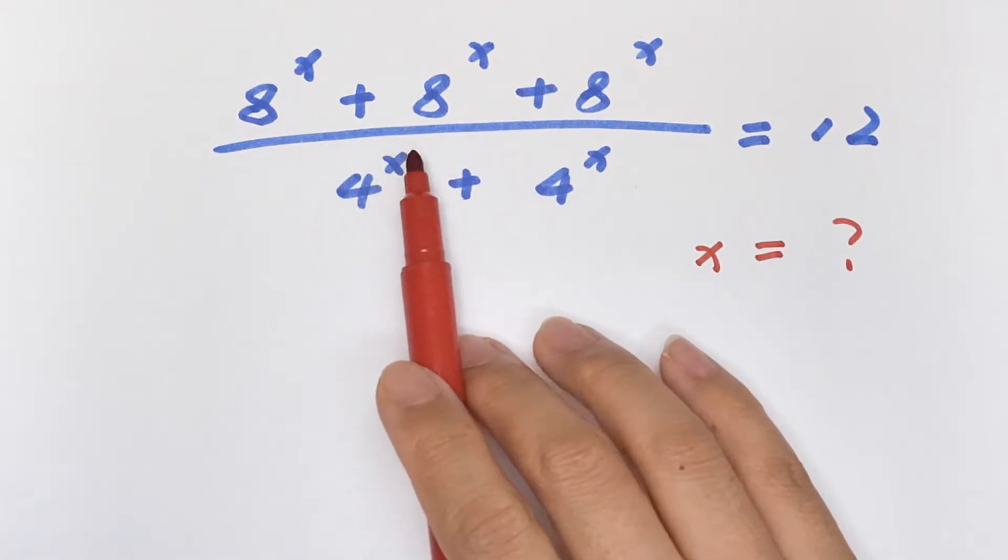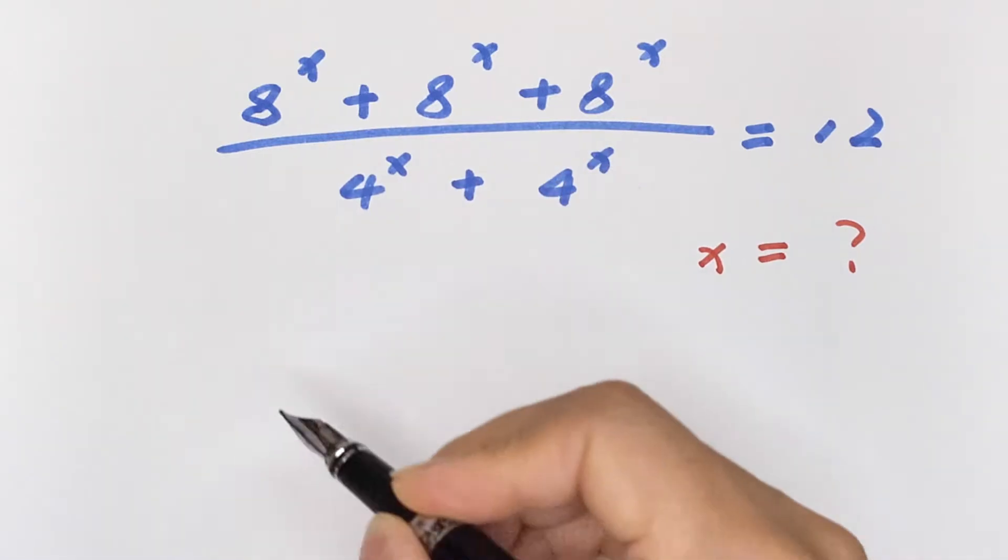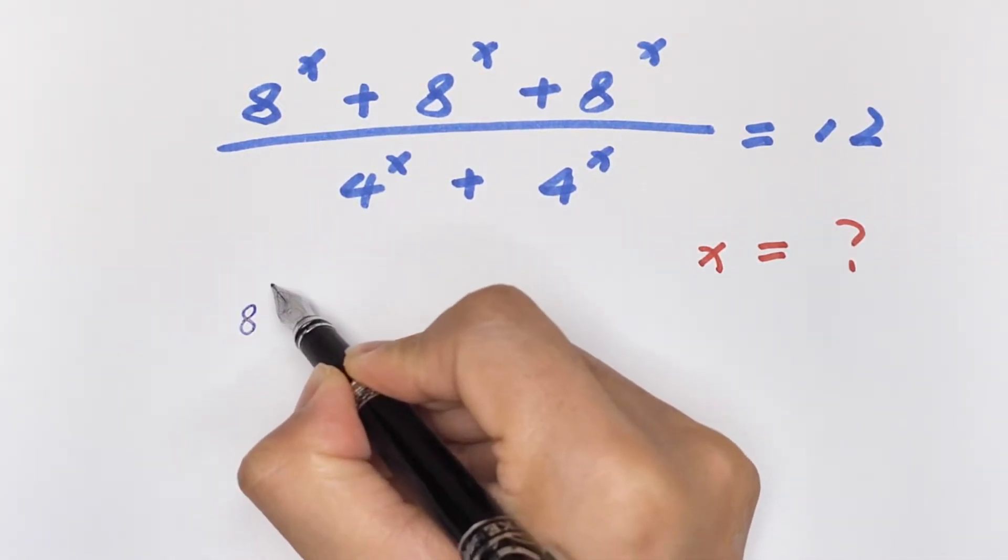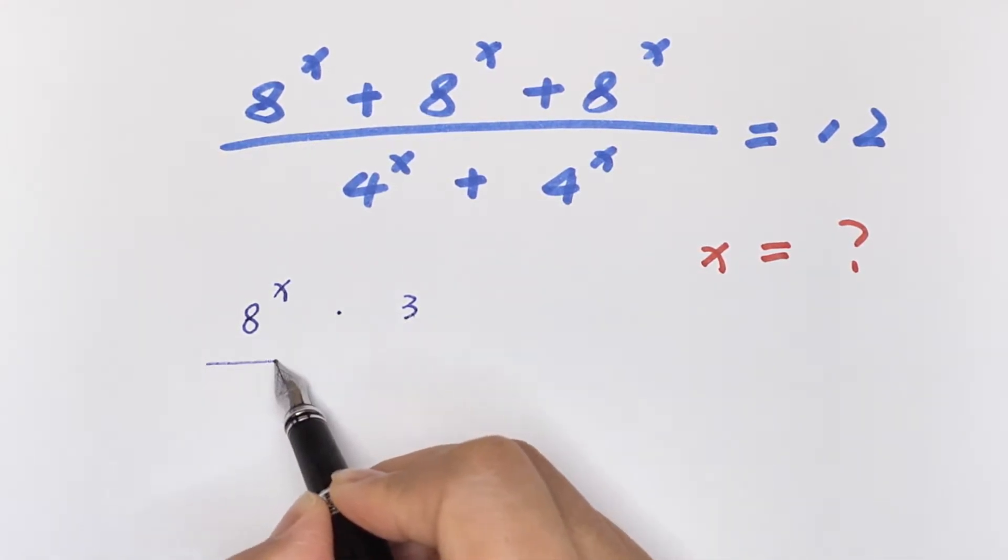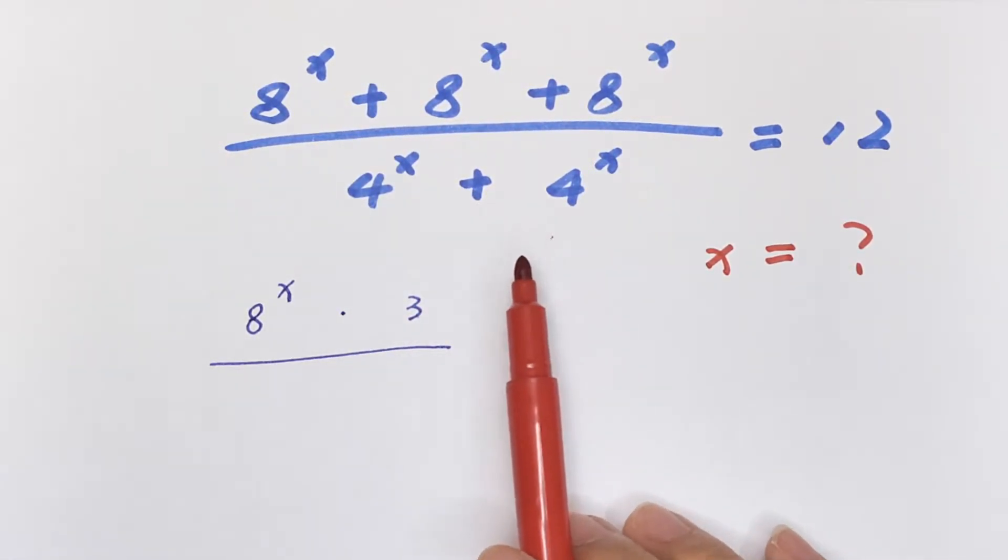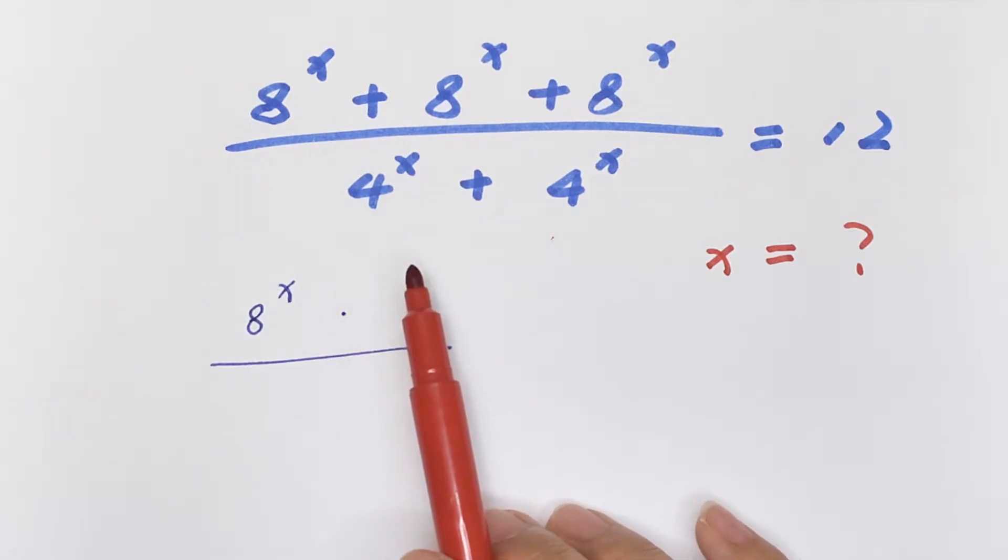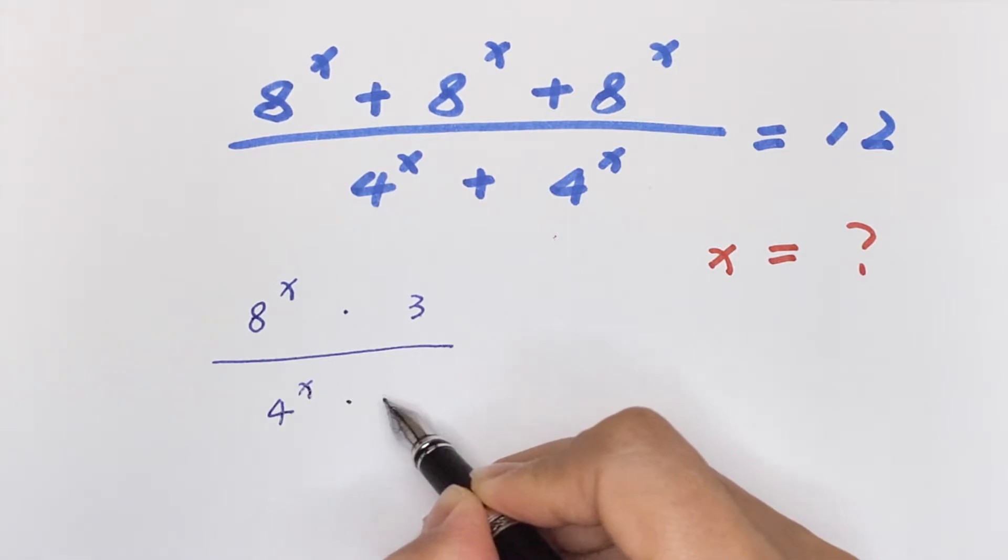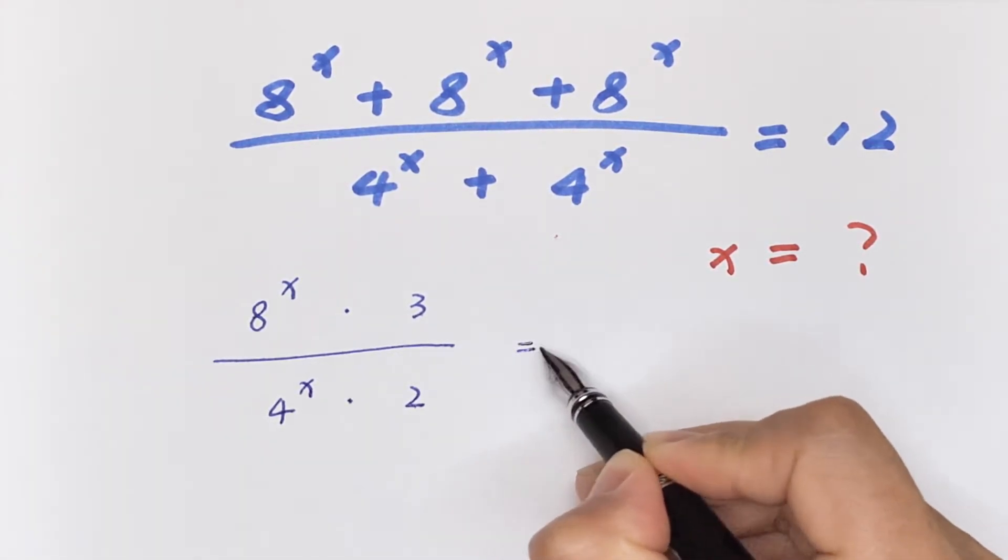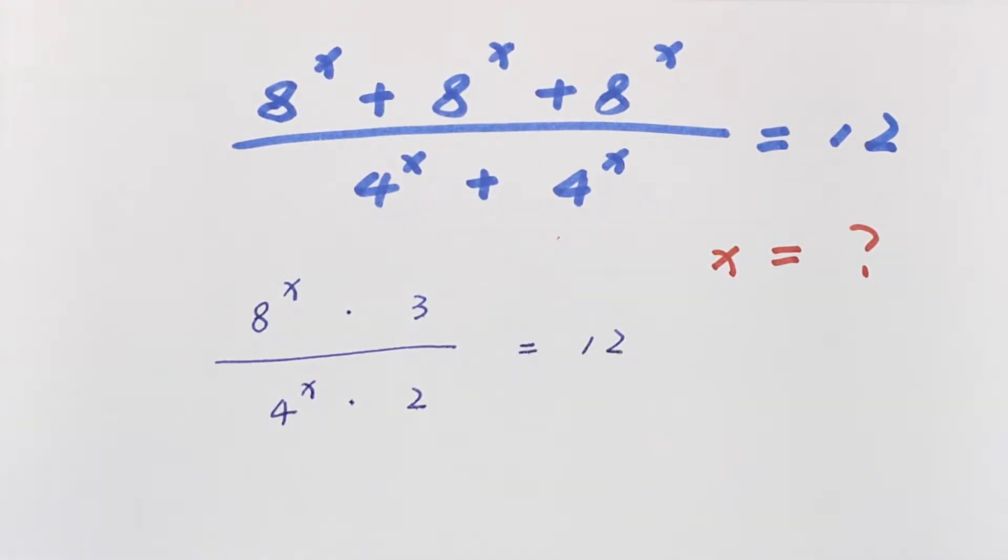So 8^x times 3 over, in the denominator there are two 4^x added, so 4^x times 2 is equal to 12.